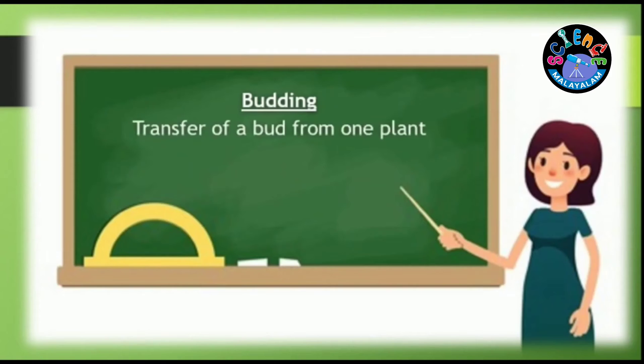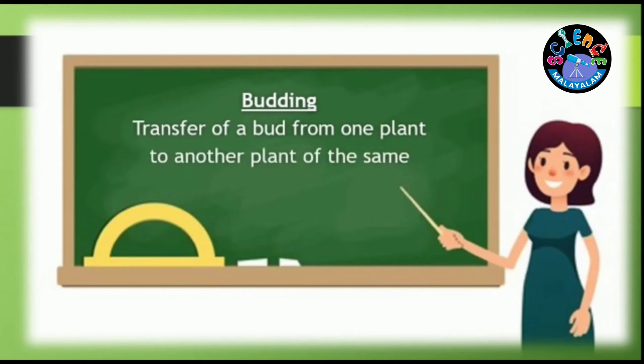Budding is the transfer of a bud from one plant to another plant of the same species.